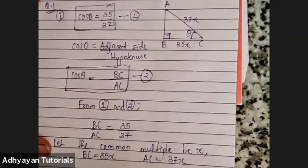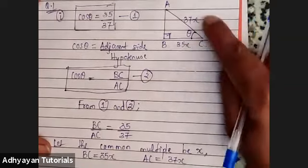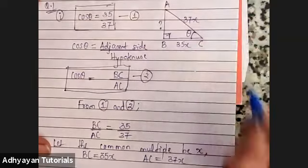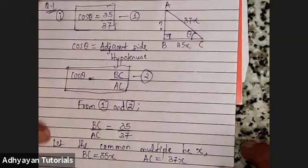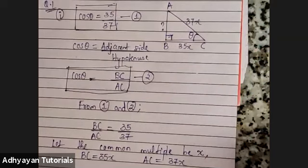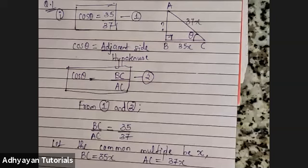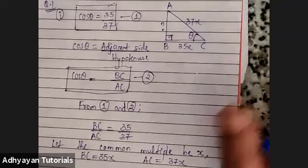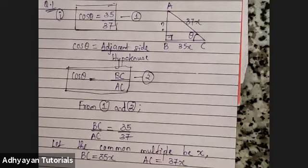Now, since I know two sides' values, can I find the third side? The question is how. By Pythagoras theorem — Rithi, Sai, Shivasri all said Pythagoras. We need to apply Pythagoras here. I hope everybody knows how to apply Pythagoras.